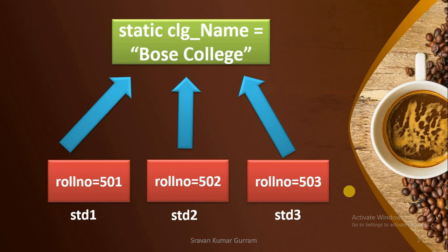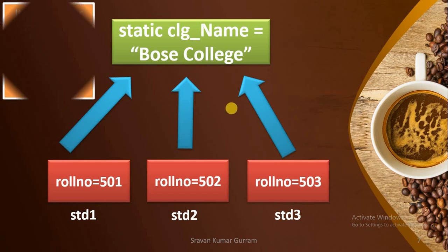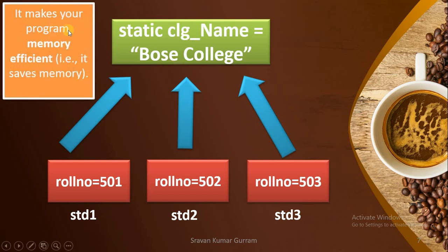If you create 100 objects, 100 slots will be created for the college name. But if you create college name as a static type, only one slot will be created and that one slot is shared among all your objects. By using static variables, we can use memory efficiently — we can save memory. This is the main advantage of the static variable concept.